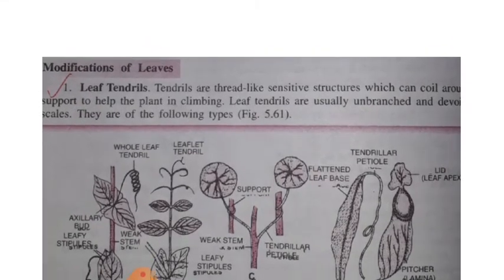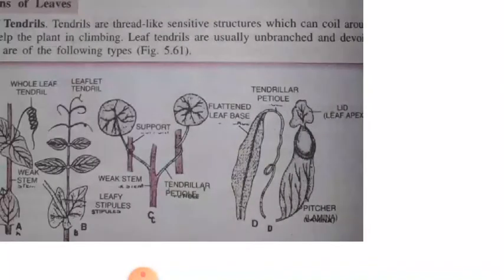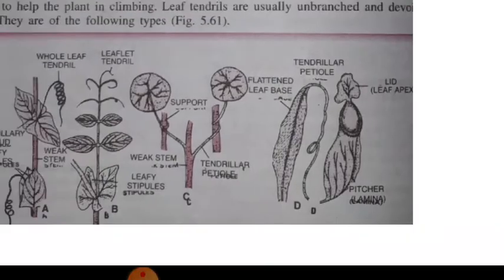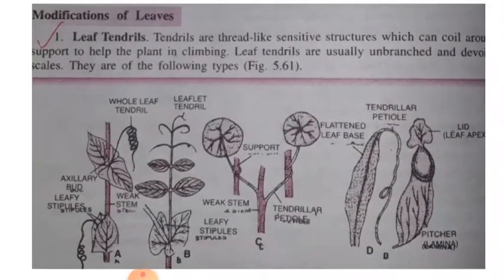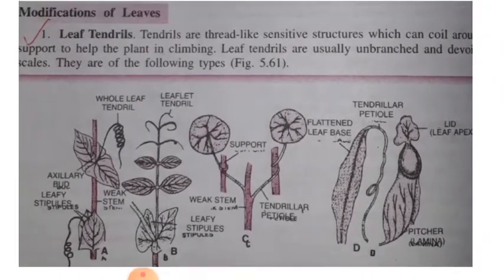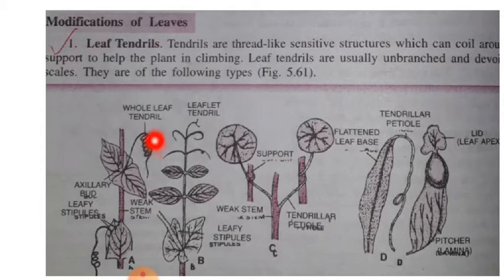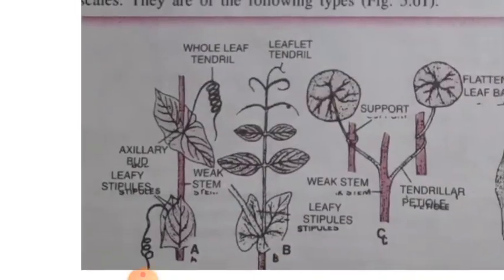Leaf tendrils are thread-like structures which coil around a support to help the plant in climbing. Leaf tendrils are usually unbranched and they are of various types. These structures help the plant in climbing and are known as leaf tendrils.